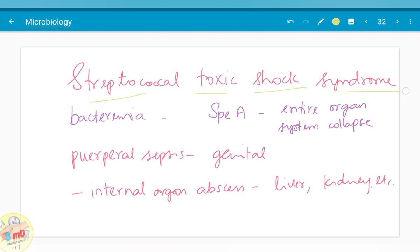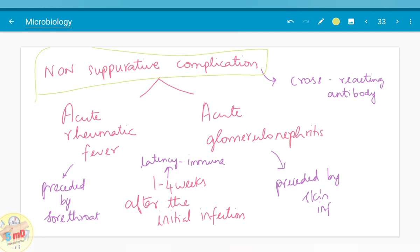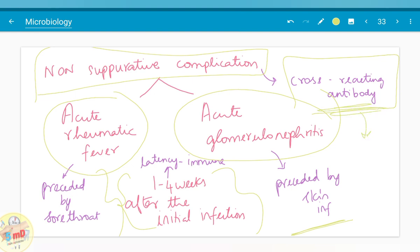Streptococcal toxic shock syndrome is associated with SPEA strain and entire organ system collapse is seen. It is a life-threatening condition. Bacteremia is one of the features. Puerperal sepsis is associated with genital infection and internal organ abscess is also seen in organs such as liver, lungs, kidney, etc. The non-suppurative complications: the main two are acute rheumatic fever and acute glomerulonephritis. Acute rheumatic fever is preceded usually by sore throat whereas glomerulonephritis is preceded by skin infection. It appears one to four weeks after initial infection. The main property of these non-suppurative complications is the cross-reacting antibody. The antibodies produced in response to streptococcus cross-react with the antigens present in kidney and heart.